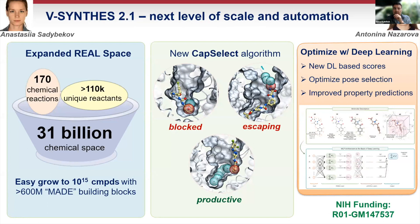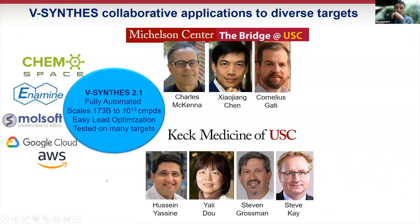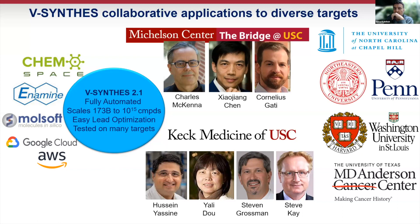We continue development of VSynthes — which is now at 30 to 60 billion, actually 173 billion compounds. We upgraded the pose selection algorithm done automatically based on pocket geometry, and we're preparing a manuscript for this. We continue working on VSynthes development with ChemSpace, Enamine, and MolSoft, applying it in quite a few collaborations within UCSD and a new center for new technologies in drug discovery and development. We have about a dozen projects now, and half of them already have sub-micromolar hits.